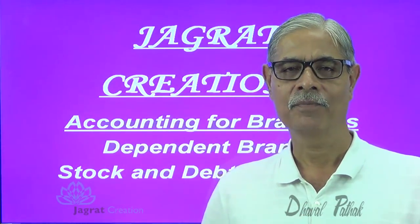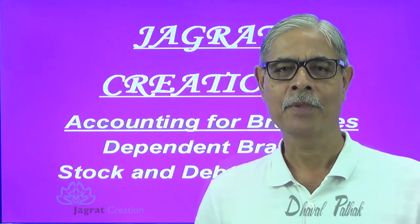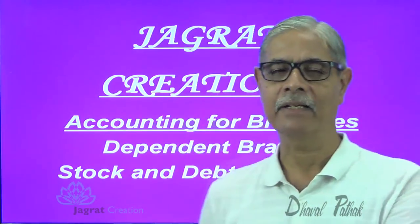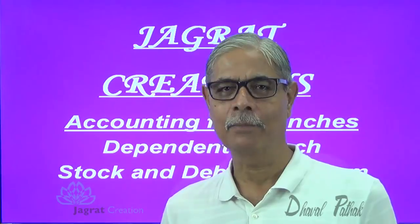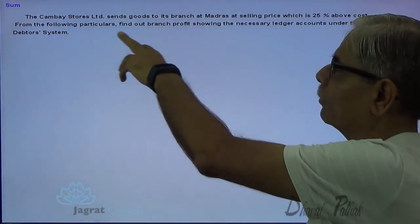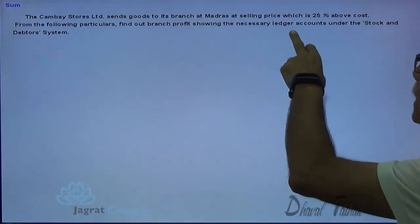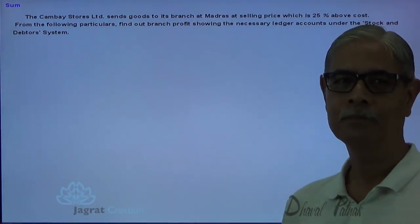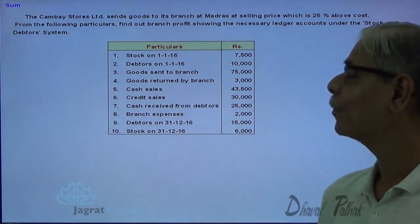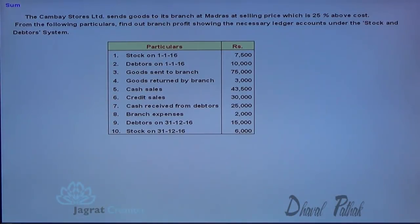My intention is not just to solve the sum, but to explain the theory part for the stock and debtors system. The sum states that Cambage Store Limited sends goods to the branch at Madras at a selling price which is 25% above cost. From the following particulars, find out the branch profit showing necessary ledger accounts under the stock and debtors system. Ten details are given, and we are required to prepare necessary ledger accounts under the stock and debtors system.